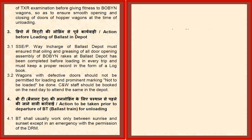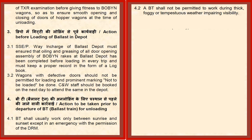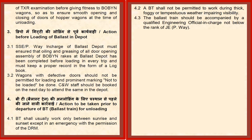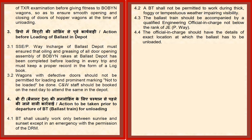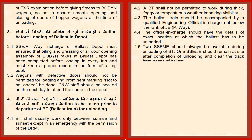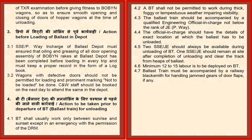Actions to be taken prior to departure of ballast train for unloading: the ballast train shall usually work only between sunrise and sunset except in an emergency with the permission of the DRM. A ballast train shall not be permitted to work during thick foggy or tempestuous weather impairing visibility. The ballast train should be accompanied by a qualified engineering official not below the rank of JE. The official in charge should have details of the exact location. JE/SSE should always remain available during unloading, and minimum 12 to 15 laborers must be deployed on the ballast train.